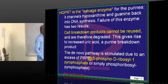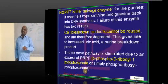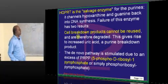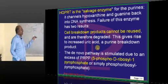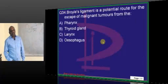HGPRT is an example of a salvage pathway enzyme — that is what you need to fundamentally remember.